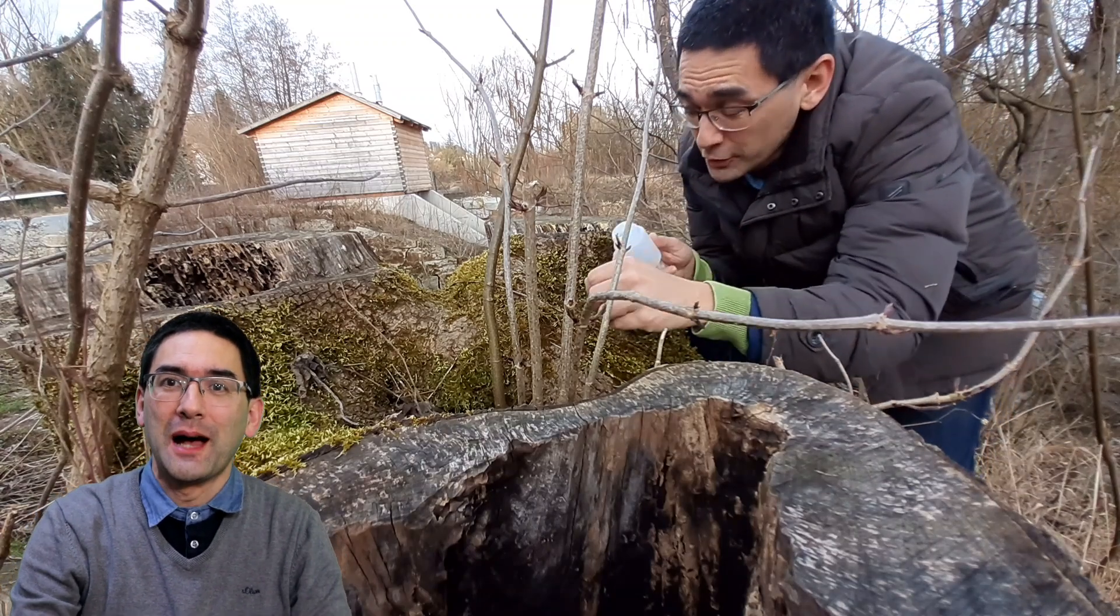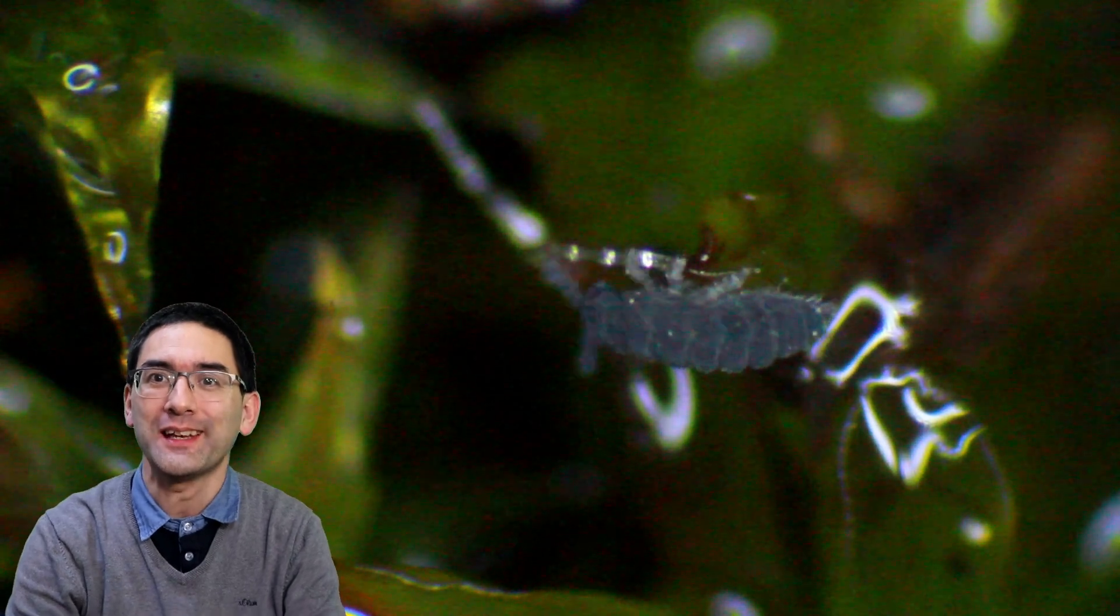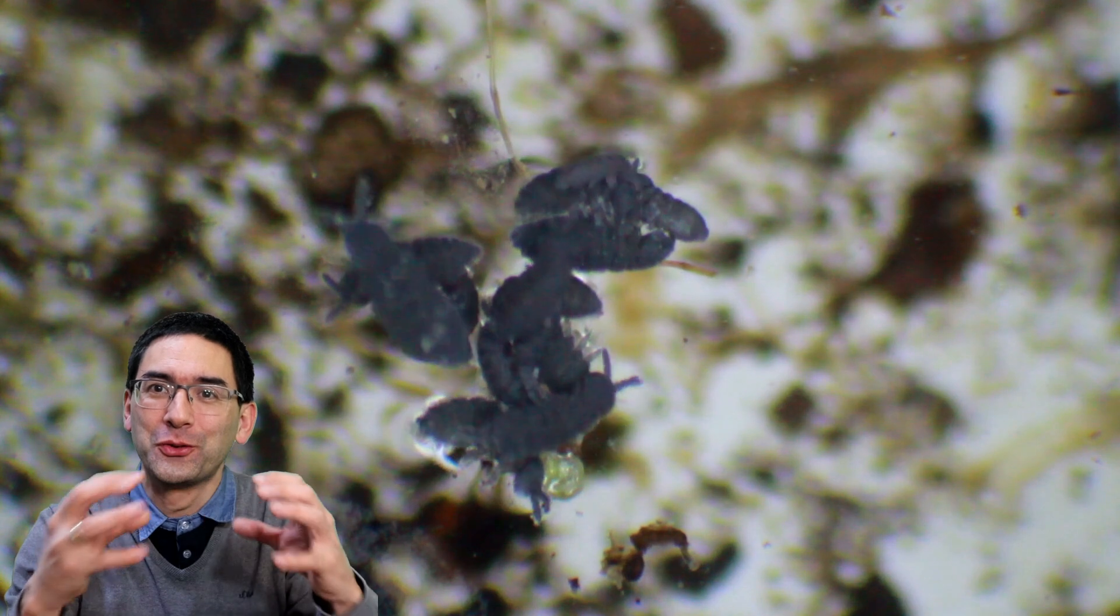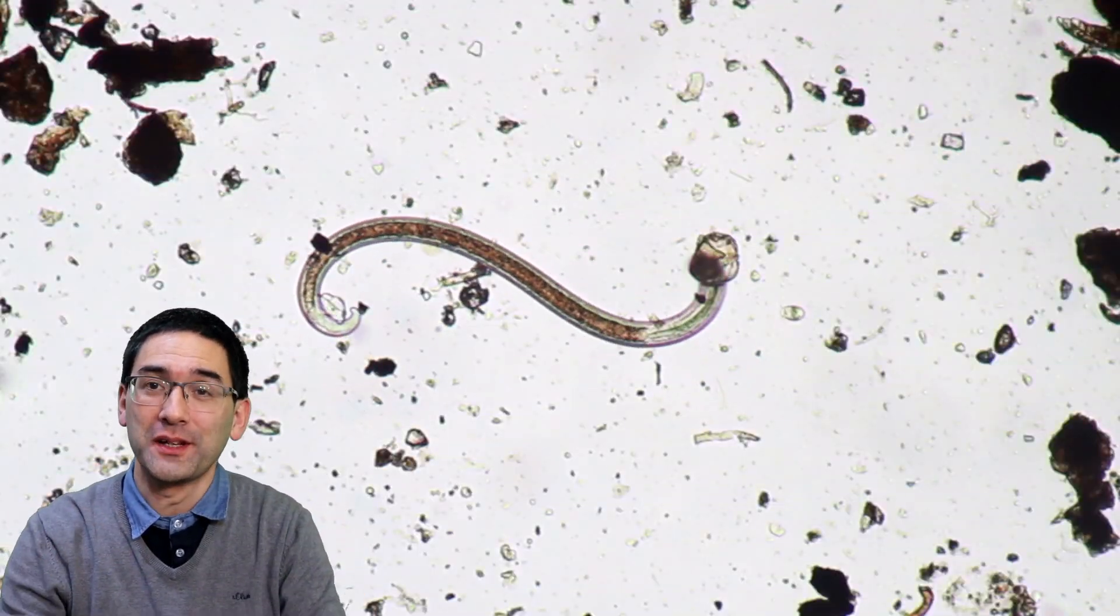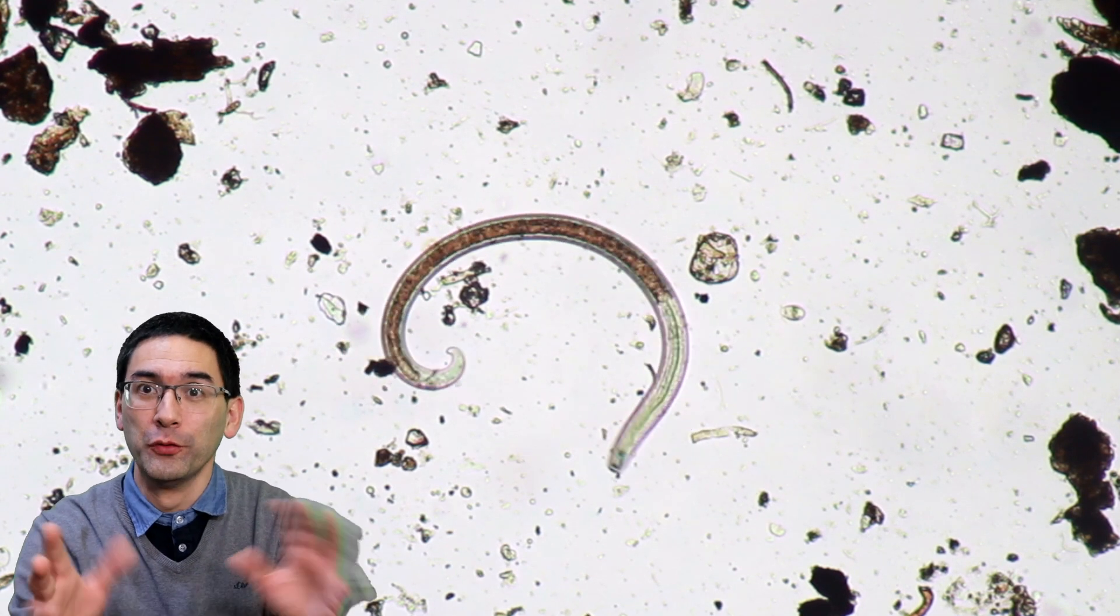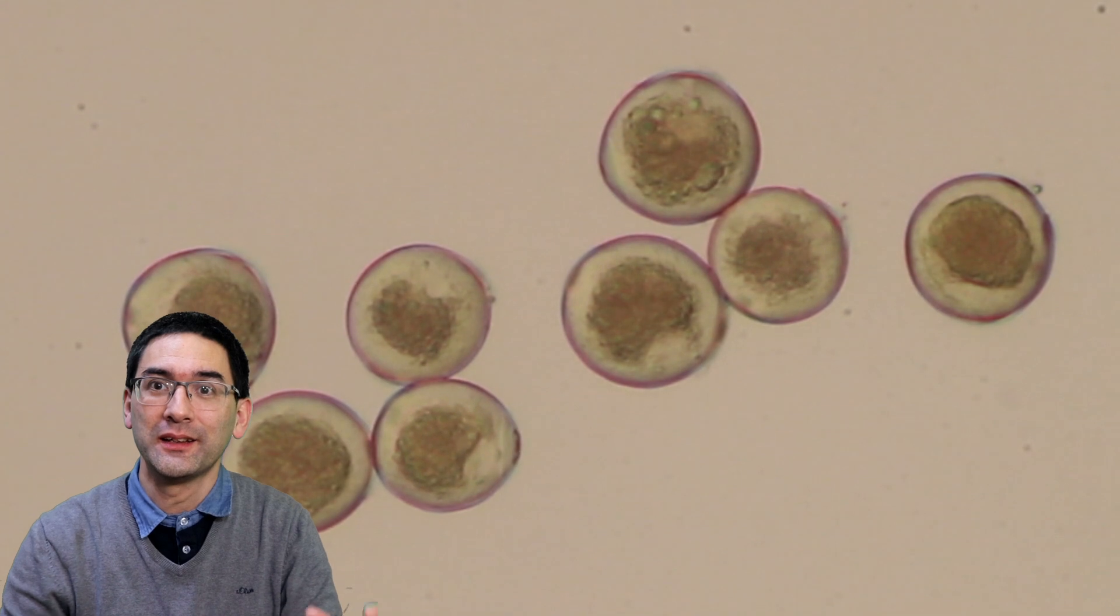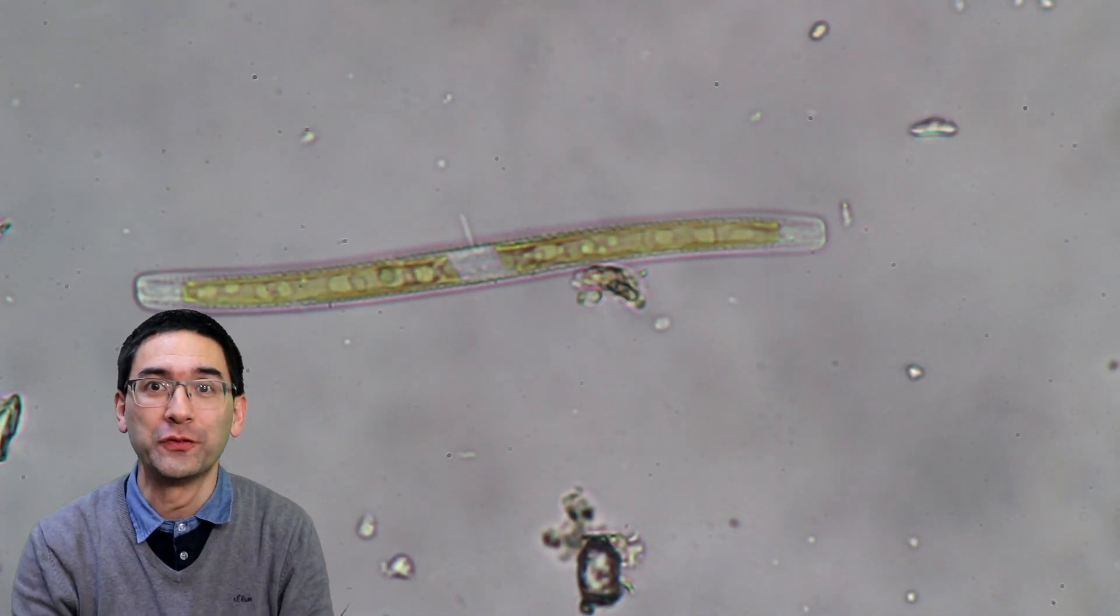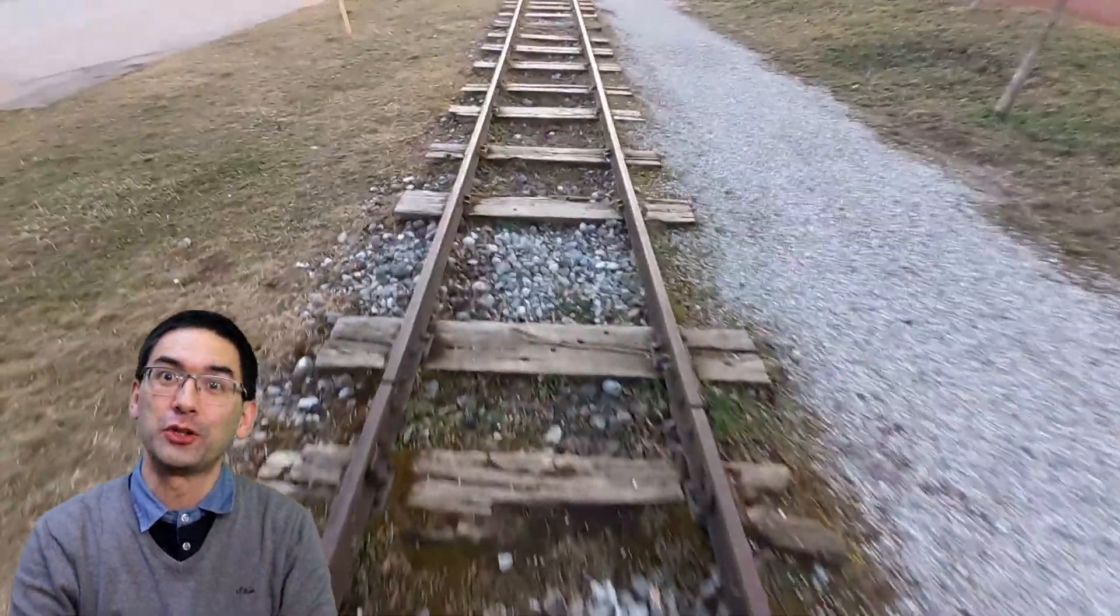Here you see me collecting some samples for microscopy. I found a whole bunch of insects in the moss that I collected. Here you see a few of them clustered together on the surface of water. I've also got some worms that I found moving around, very interesting pollen grains, and of course a whole bunch of diatoms. Where did I find them? Well, next to this train track here.